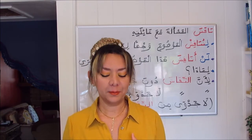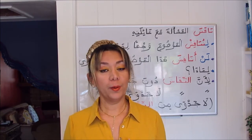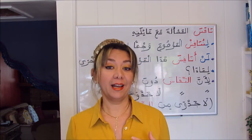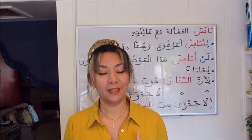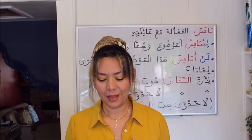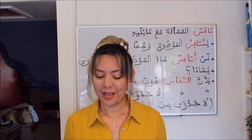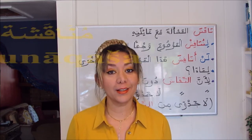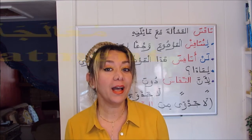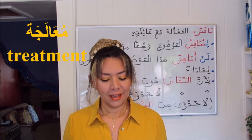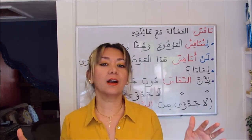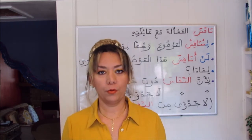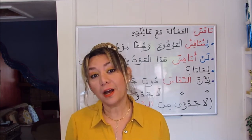Form-three verbs which follow the pattern فاعل have verbal nouns following two patterns: فِعال — like نِقاش meaning discussion, and عِلاج meaning treatment — as we've just learned; and the pattern مُفاعَلة — like مُناقَشة meaning discussion, and مُعالَجة meaning treatment. These have similar meanings and are interchangeable, though sometimes only one form is in common use.